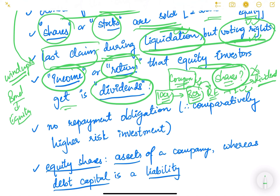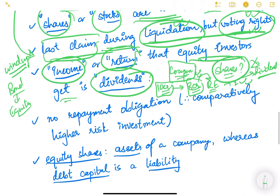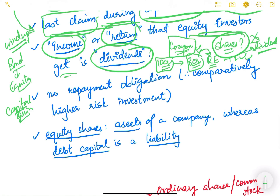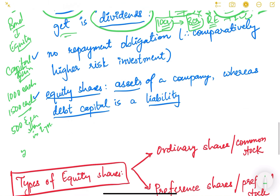The best return people get from equity is capital gains. For example, if you buy an Amazon share today at 1,000 rupees and after two years the price is 1,500 rupees, you gain 500 rupees per share over two years — that is 250 rupees per year. On a 1,000 rupee investment, 250 rupees per year is a 25% annual return. This is a rough calculation of the return from capital gains.